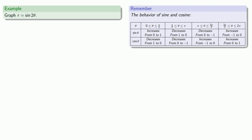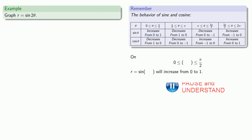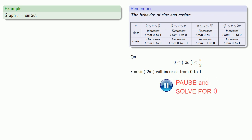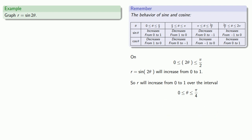How about r equals sine of 2 theta? Let's consider the behavior of sine and cosine. It's important to remember that even though we called this theta, what matters is the argument we're taking the sine of — so we can think of this as r equals the sine of some quantity. As long as that quantity is between 0 and pi over 2, r equals sine of it will increase from 0 to 1. Since our argument is 2 theta, we solve the inequality to find that r increases from 0 to 1 over theta between 0 and pi over 4.